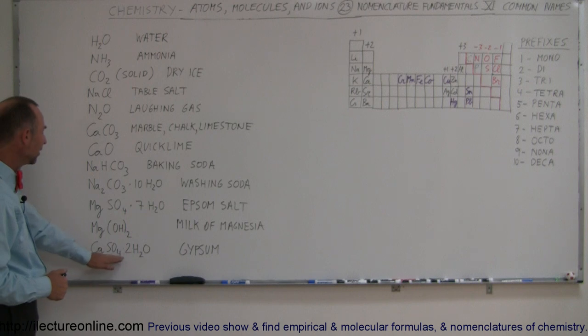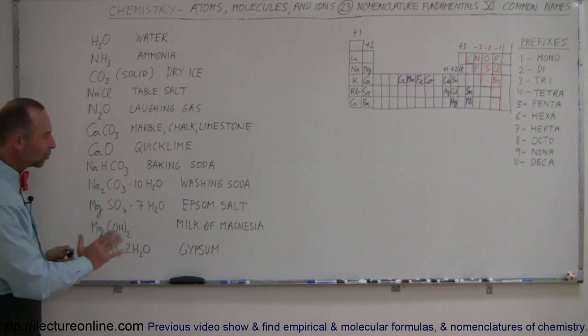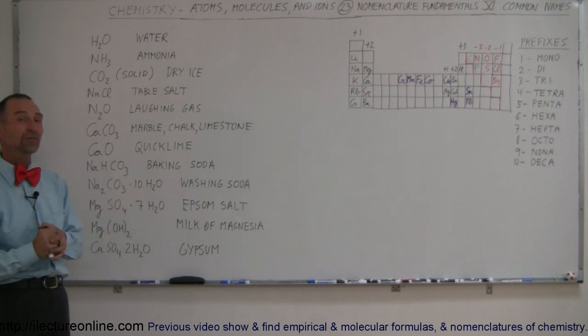And then we have calcium sulfate dihydrate that is also known as gypsum or the kind of material that we use to put on the walls of interior buildings or houses, kind of like a drywall type of thing.